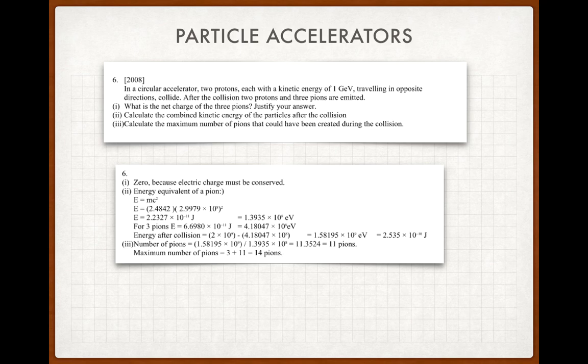Now, number three, calculate the minimum number of pions that could have been created. Well, we know to create one pion, we need 1.3935 by 10 to the 8 electron volts. We know that there's two giga electron volts available, and if we divide the small one into the big one, you'll end up with a value of 14. They do it slightly different there in the mark scheme, but you should be able to do it nonetheless.